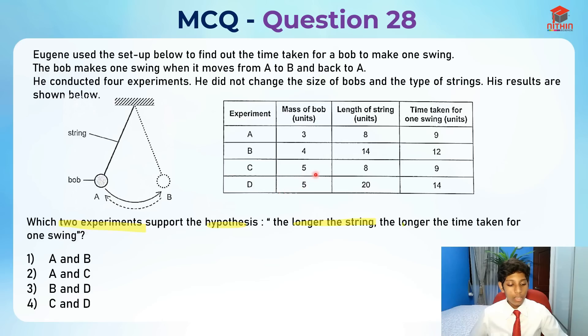Experiments C and D, the mass of the bobs are the same, 5 units each. So this is right. The length of the string, at start it was 8, the time taken is 9, and then for experiment D is 20, the length of the string, and the time taken for one swing is 14.